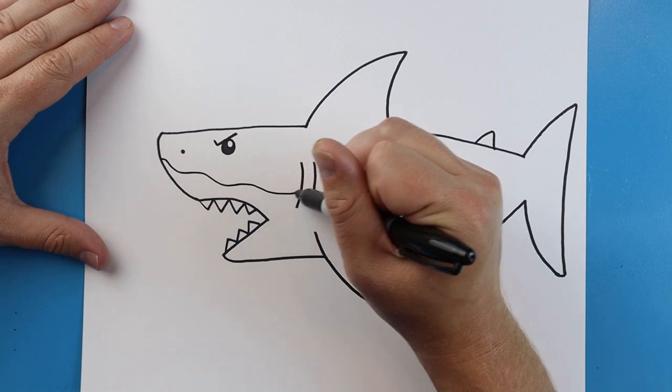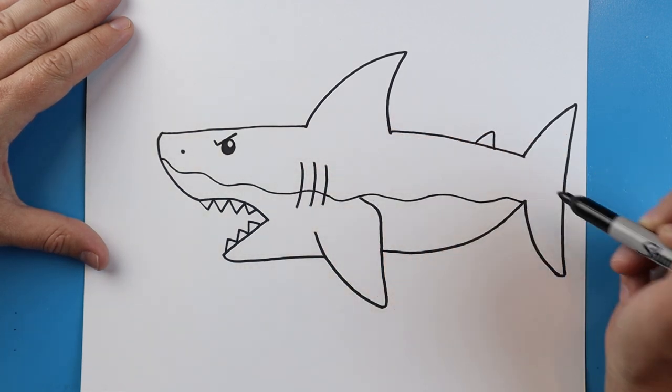Then starting here I'm going to make a little wavy line that's just going to come all the way to the end of the tail.